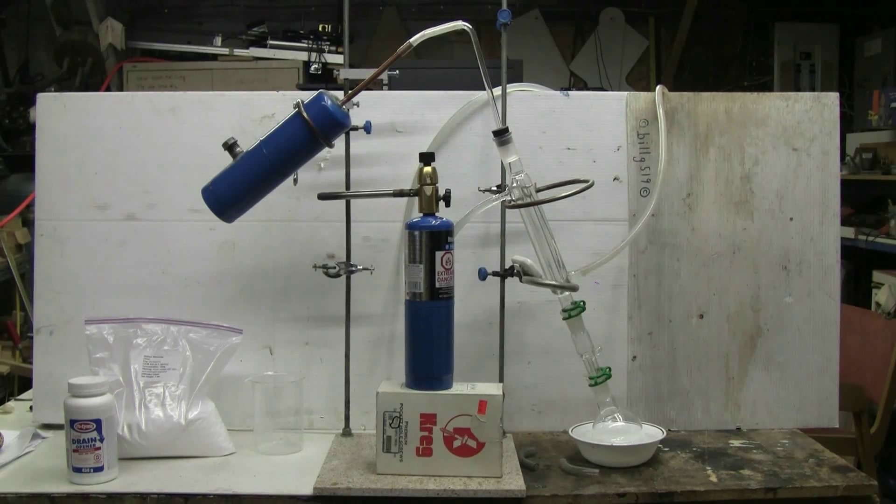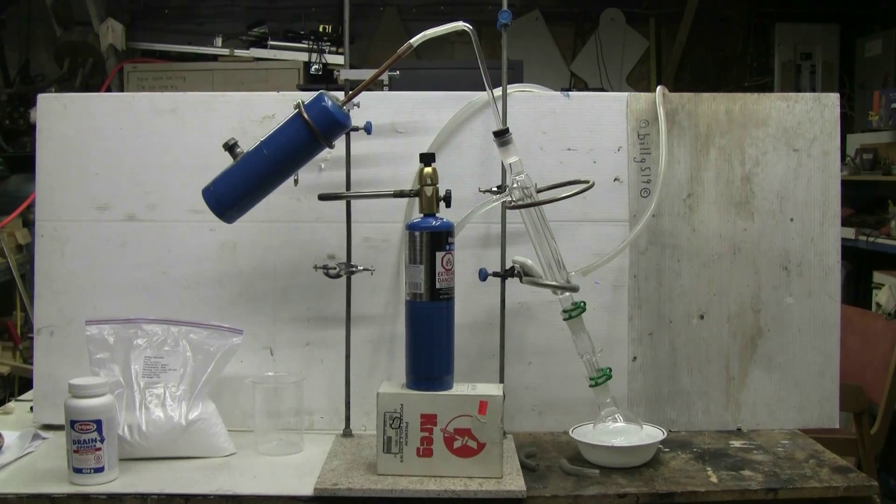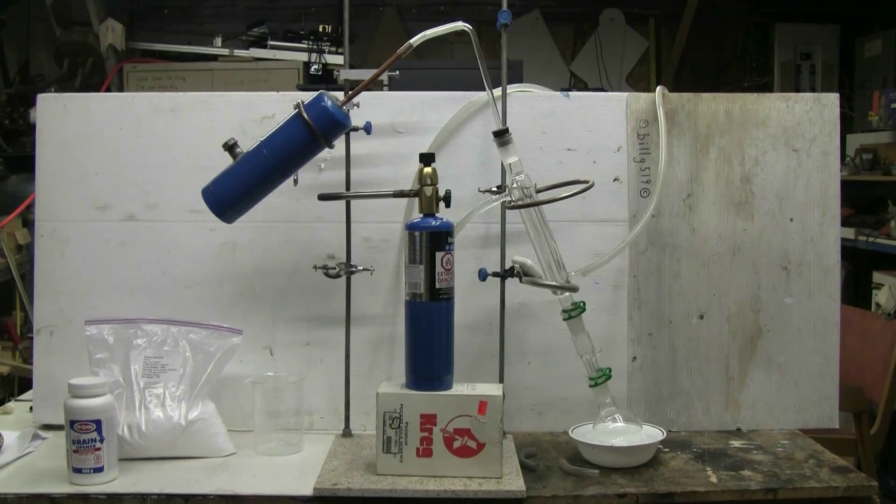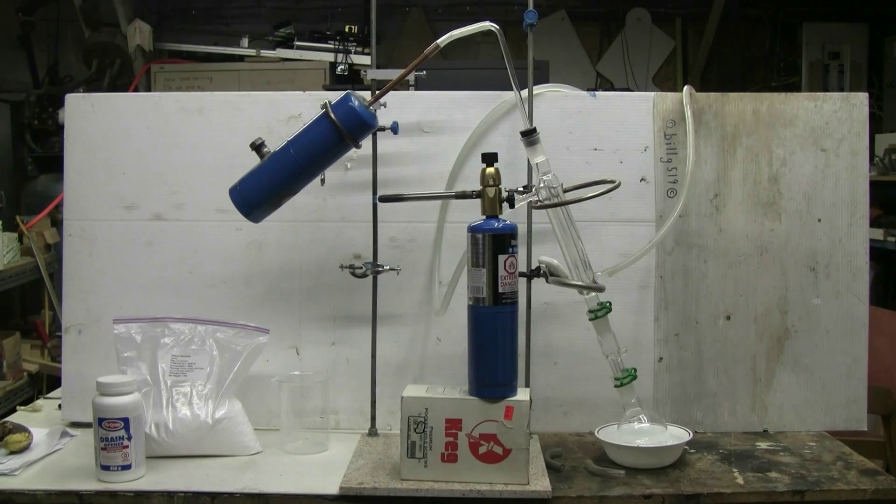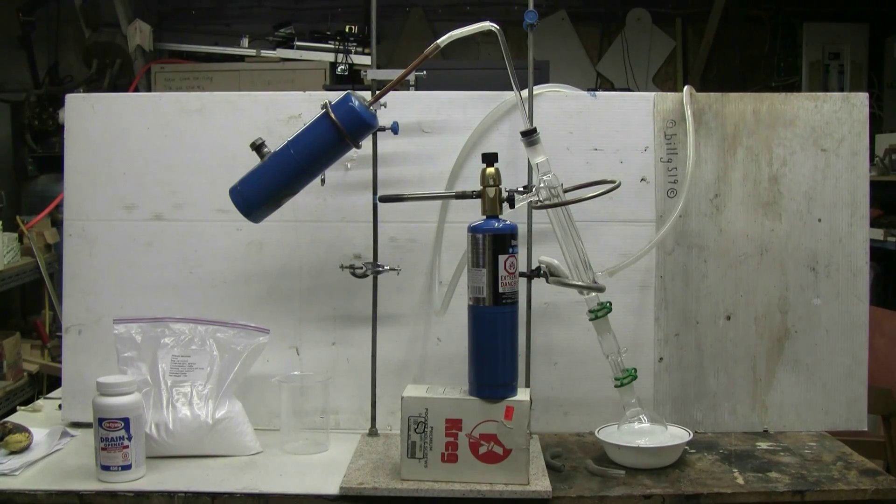Here's the final setup for this experimental synthesis of benzene from sodium benzoate and sodium hydroxide. Water flow to the condenser's turned on, the 250 milliliter round bottom collection flask is in a small ice bath. All I have to do at this point is light the torch. The torch is now lit, although it's nearly impossible to see the blue flame from the torch in the shop lighting here.